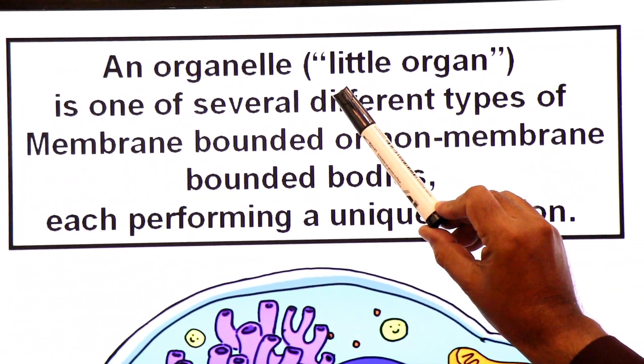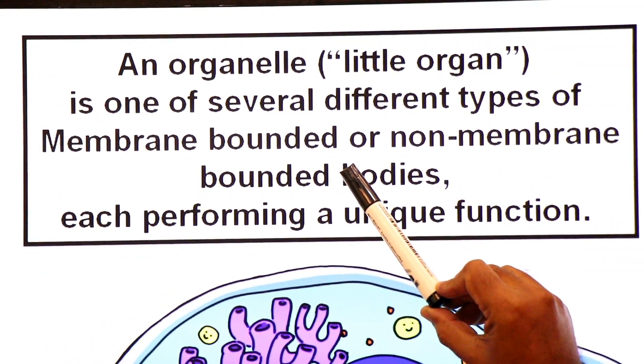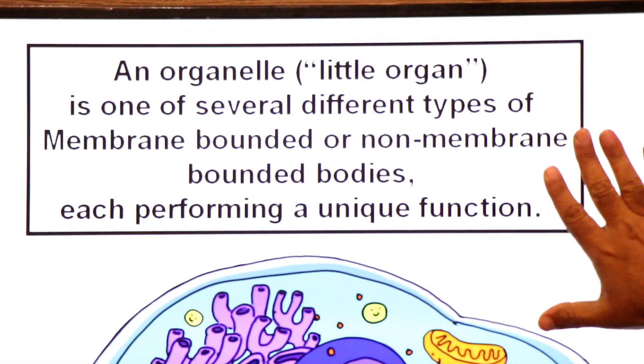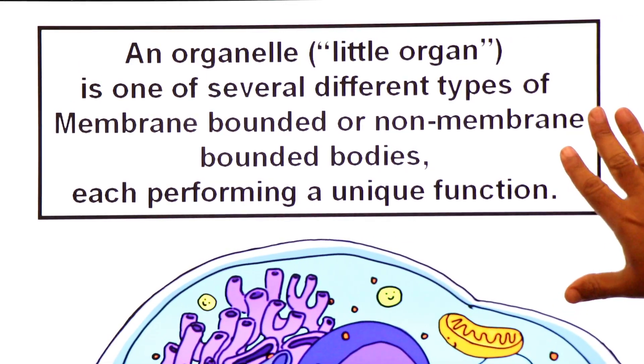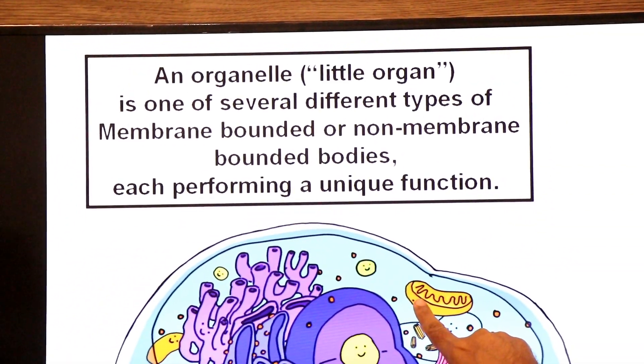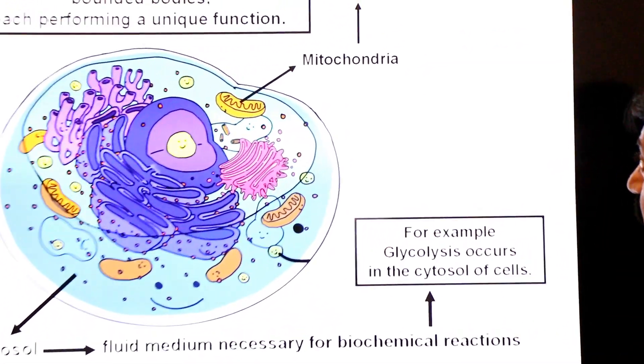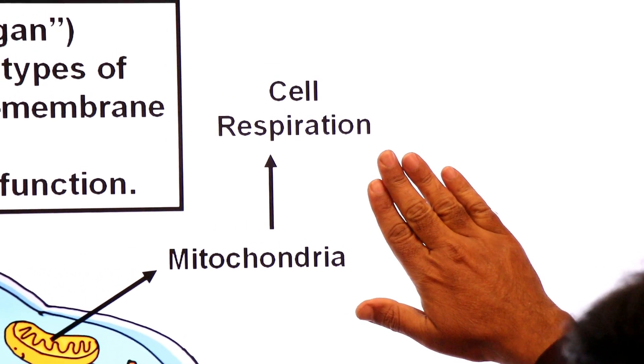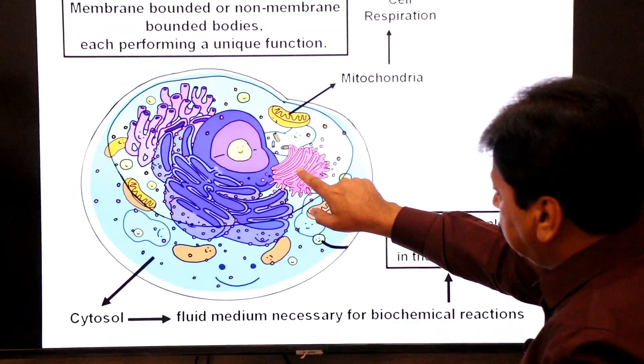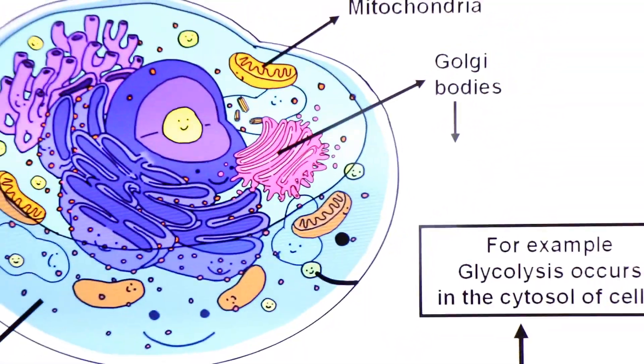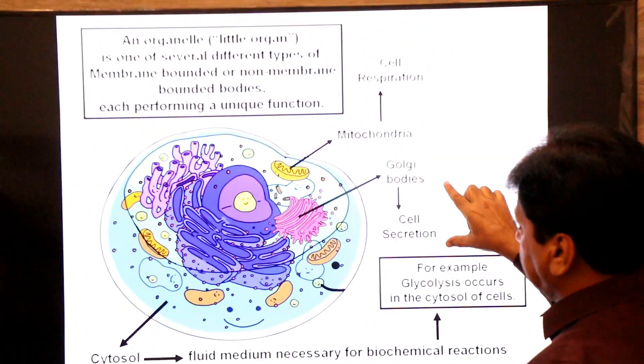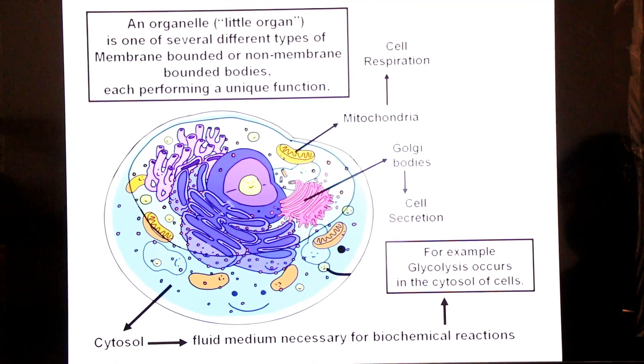What is organelle? An organelle means little organ. It is one of the several different types of membrane bounded or non membrane bounded bodies, each performing a unique function. Organelles are called little organs. Some have membranes and are called membrane bound organelles. Some don't have membranes and are called non membrane bound organelles. Each has a specific unique function. For example, mitochondria are membrane bounded organelles used for cellular respiration. Golgi body secretes carbohydrates or modified proteins.